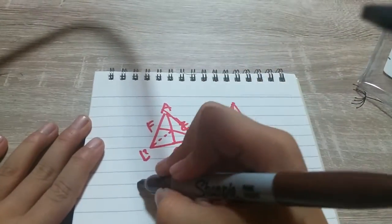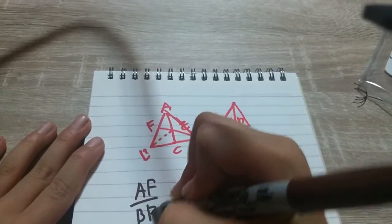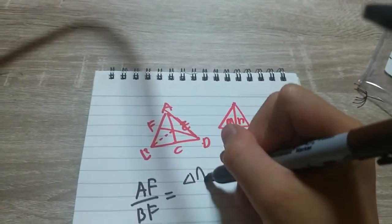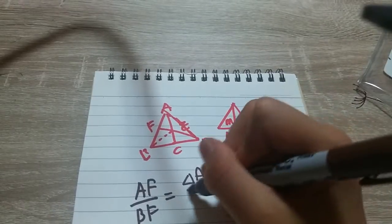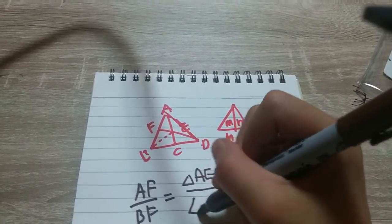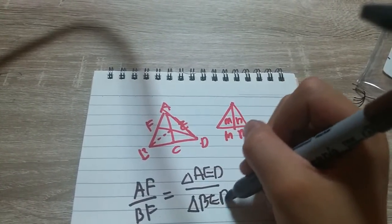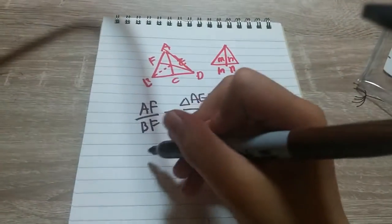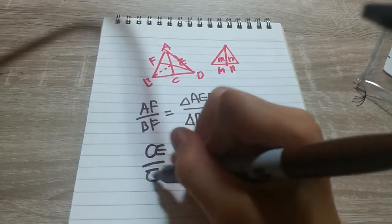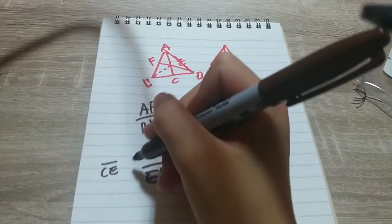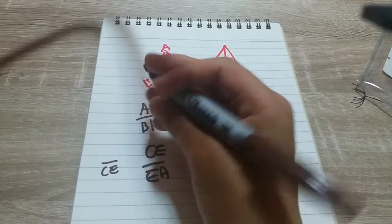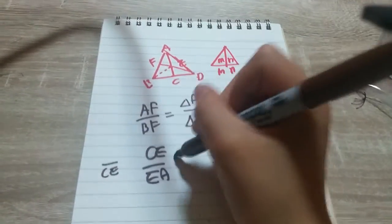First of all, AF over BF equals the triangle AED over BED, I think. And CE over EA, I don't write this because, well, this is a little—I'm just simplifying it, to be precise.